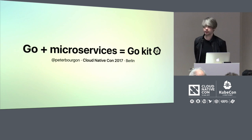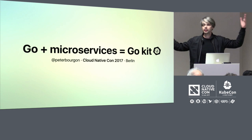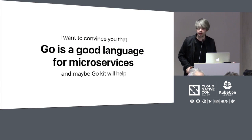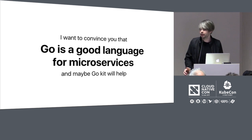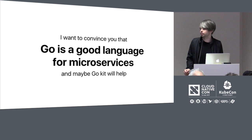My name's Peter. You can decide for yourself if I'm trustworthy at the end of the talk, but you can follow me on Twitter. This talk is about cloud native applications — what is a cloud native application? It has all these properties, and one of them, importantly, is that it's kind of microservice oriented. I want to convince you that Go is a good language to write your microservices in, and I think GoKit will help. But ultimately, I'm not really pushing GoKit — it's just a means to express a few ideas. I'm really more motivated to get you all to consider Go for your business logic.